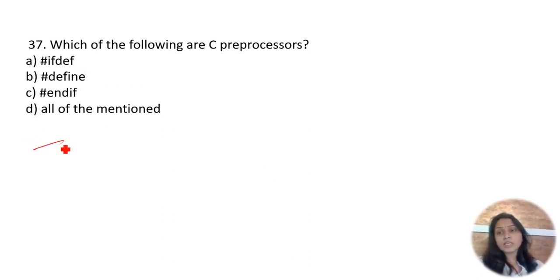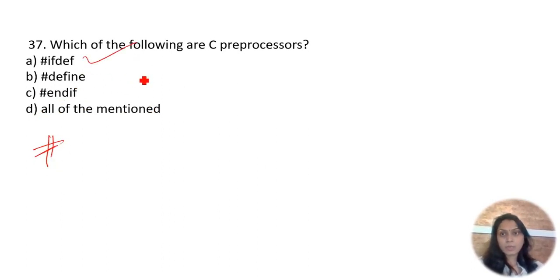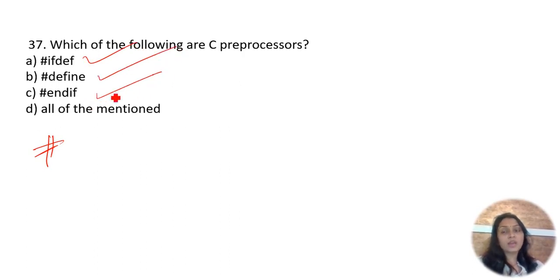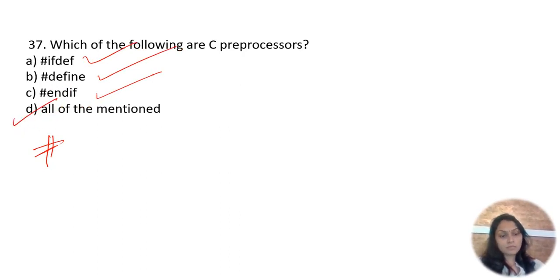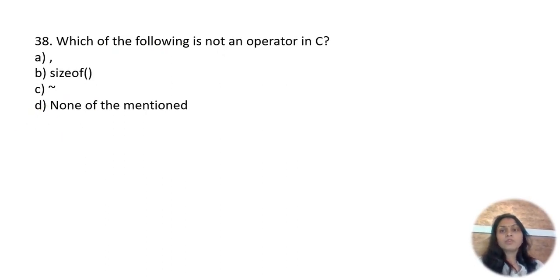Which of the following are C preprocessors? Preprocessors always start with the hash (#) symbol. #if, #define, and #ifdef are all preprocessors. So all of the mentioned are C preprocessor directives.